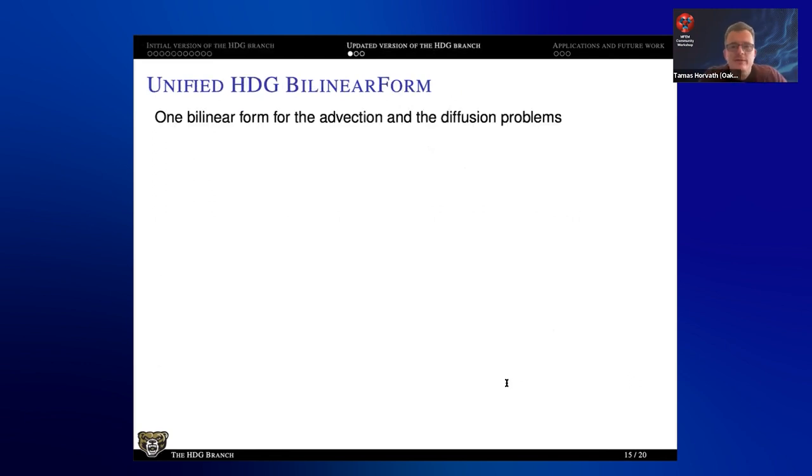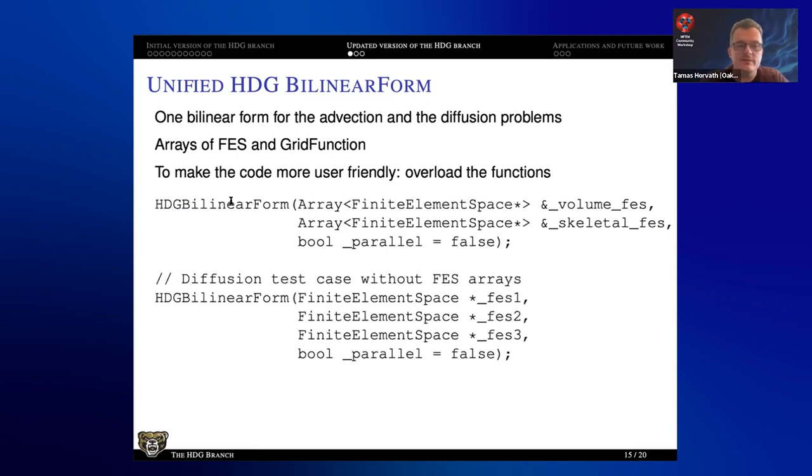So then throughout the years, I did some updates. And the first initial version had a different bilinear form for the advection problem and for the diffusion problem. So the first modification a couple of years ago was when I created a bilinear form that can handle both. The secret was that I used arrays of finite element spaces, arrays of grid function. Basically, those arrays of finite element spaces were there to mimic the tensor product behavior of, for example, the volume finite element spaces for the diffusion. And to make it a little bit more user friendly, this is the true approach that I'm using. I have an array of volume finite element spaces and another array of skeletal finite element spaces. For the diffusion and the advection, I could overload it with some nicer functions so that the user doesn't have to create those arrays. That makes it slightly easier.